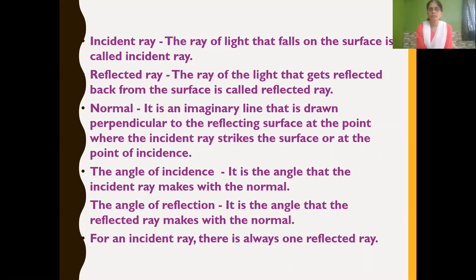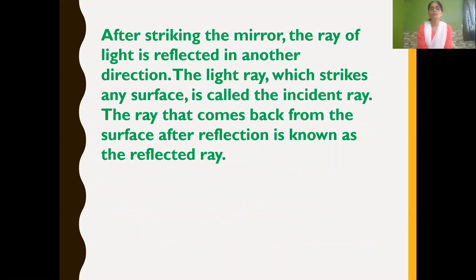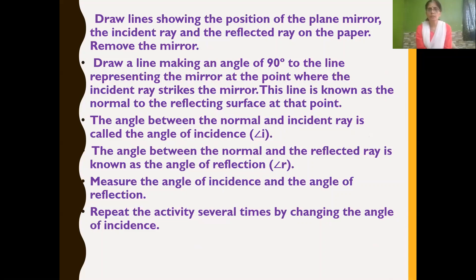For an incident ray, there is always one reflected ray. After striking the mirror, the ray of light is reflected in another direction. The light ray that strikes the surface is called the incident ray, and the ray that comes back from the surface after reflection is the reflected ray. Now, suppose you draw a line showing the position of the plane mirror, then draw the incident ray and reflected ray on paper.